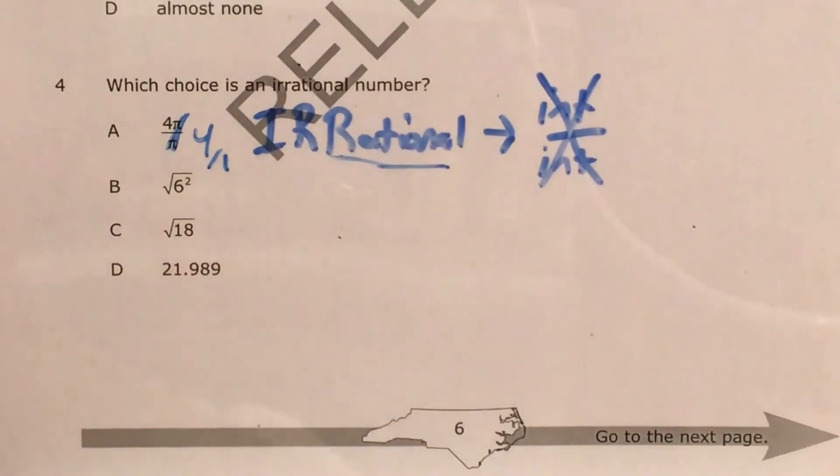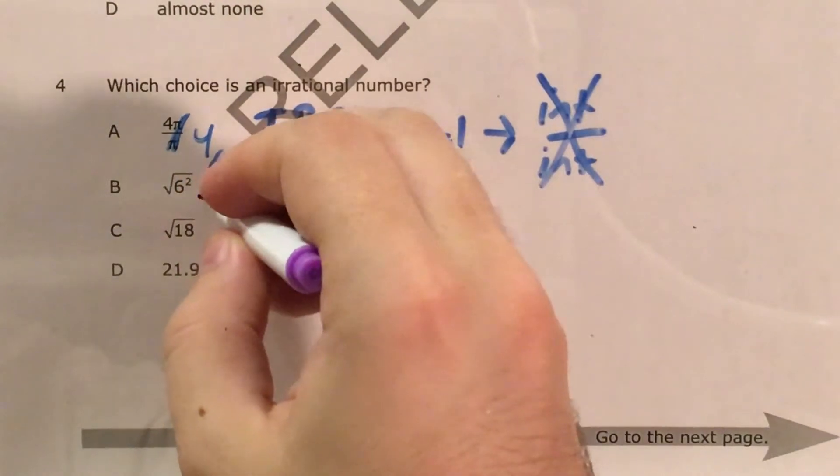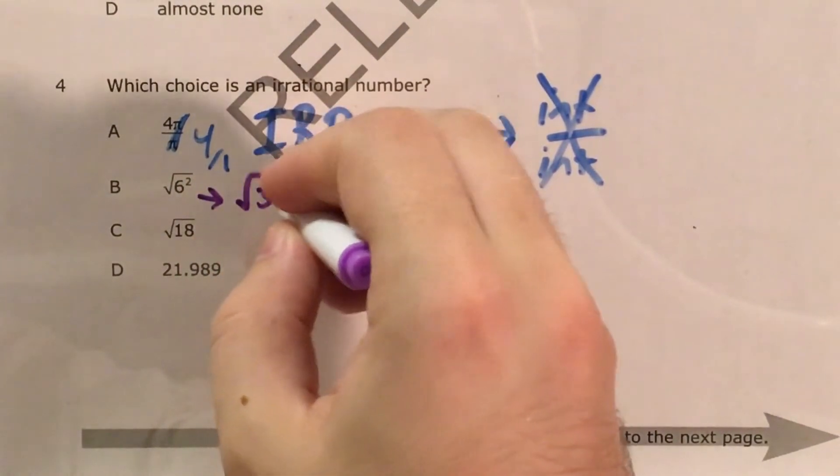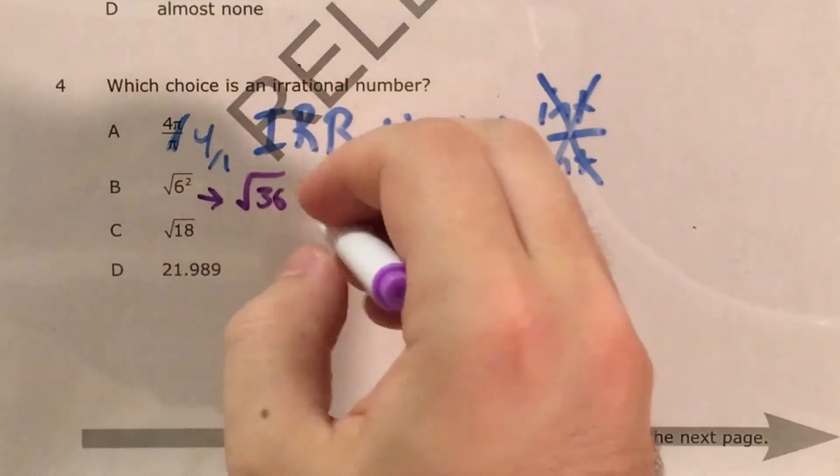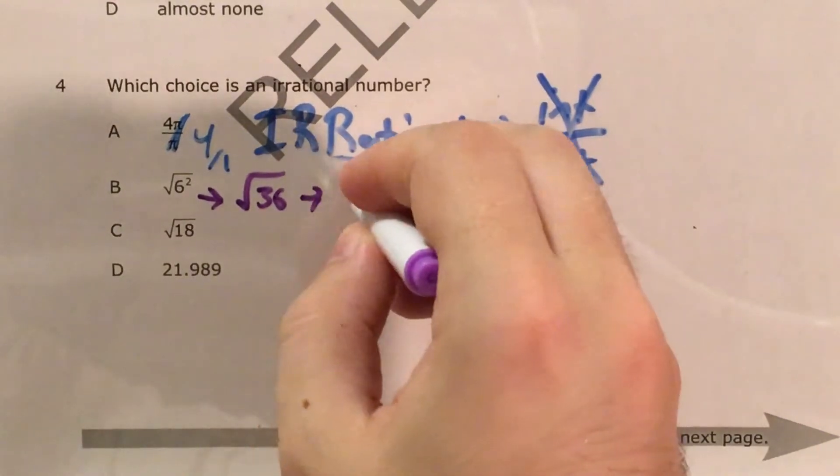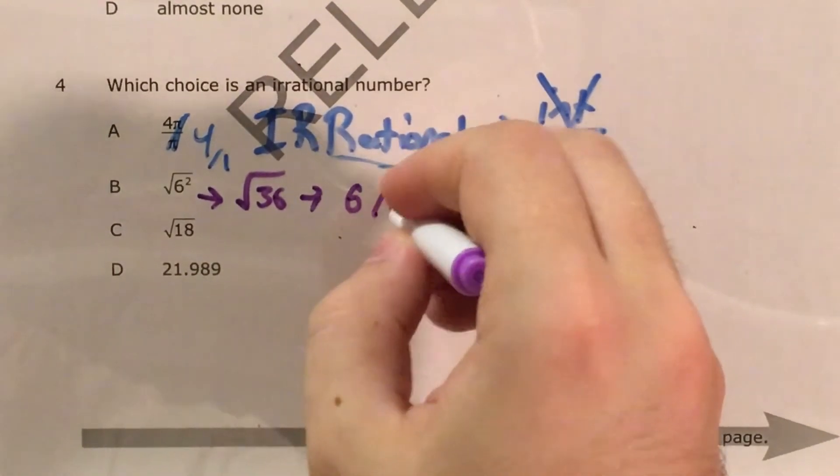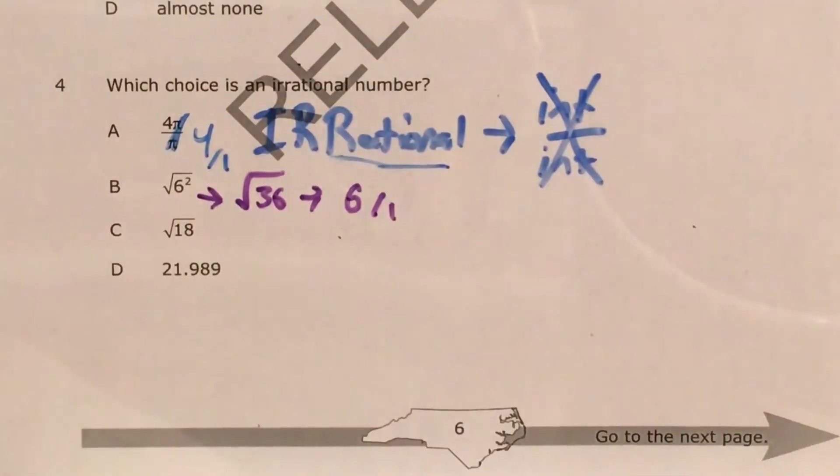Choice B is next, and it says the square root of 6 squared. This is also known as the square root of 36, because 6 squared or 6 times 6 is 36, also known as just 6. And again, I can make that 6/1 or 6 wholes and prove that it's rational.